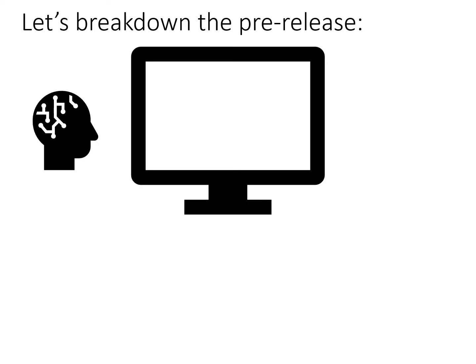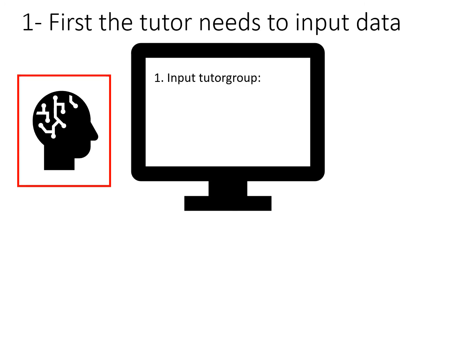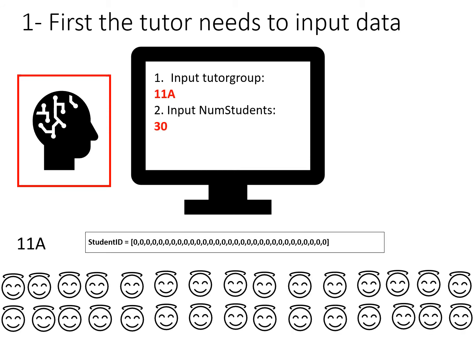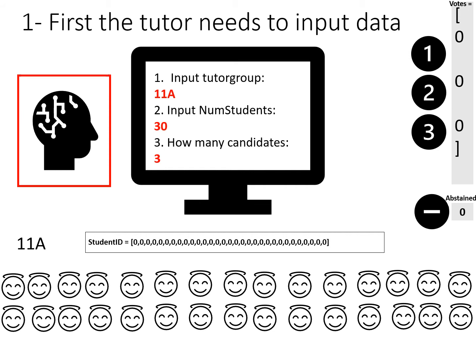Here are the steps to see what's happening. Number one, we have the tutor and the interface. The program asks the tutor to input the tutor group — the tutor inputs 11a. We've created an array called student ID, initialized to 0 for the number of students. We ask the tutor how many candidates there are. If the tutor says three, we create an array called votes with three elements, initialized to 0, 0, 0.